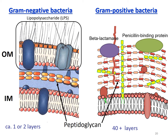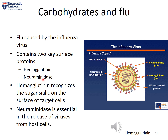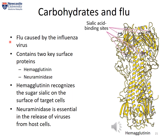Briefly, the roles of sugars in influenza virus infection involve two important surface proteins: hemagglutinin and neuraminidase. Neuraminidase allows the release of viruses from the host cell post-infection. In order for the virus to infect a new cell, hemagglutinin recognizes the sugar sialic acid on the surface of the target host cell. Hemagglutinin is itself a glycoprotein containing multiple sialic acid binding sites, with glycan molecules attached on its surface that are complementary to the target it binds to.